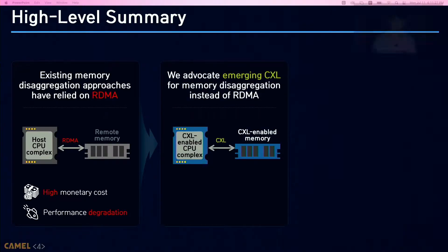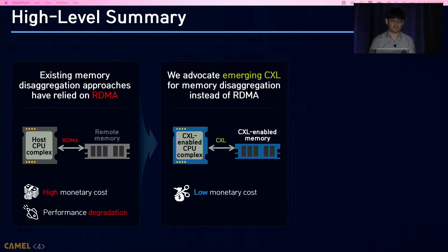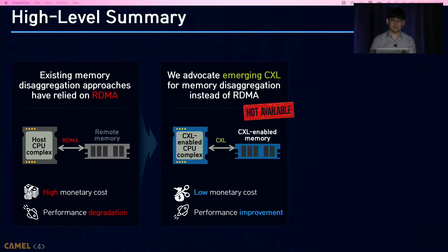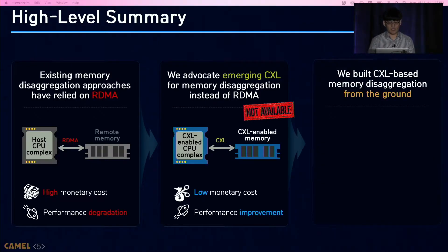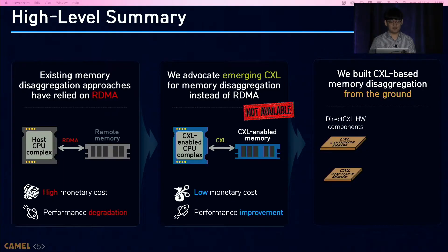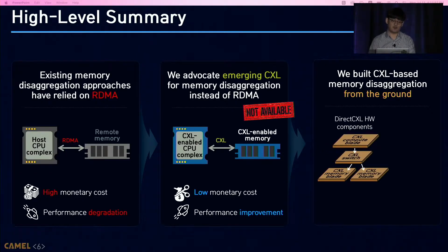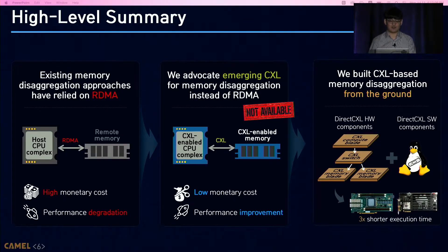Instead of RDMA, we suggest using CXL for memory disaggregation. CXL can reduce monetary cost and minimize performance degradation. However, a CXL-enabled system is not yet available. In this work, we designed CXL-based memory disaggregation called Direct CXL, which implements a CXL-enabled host, CXL memory device, and CXL switch. We also modified the Linux kernel to expose CXL-attached memory to user-level applications. Our evaluation using a real hardware prototype shows three times better performance than RDMA-based memory disaggregation.